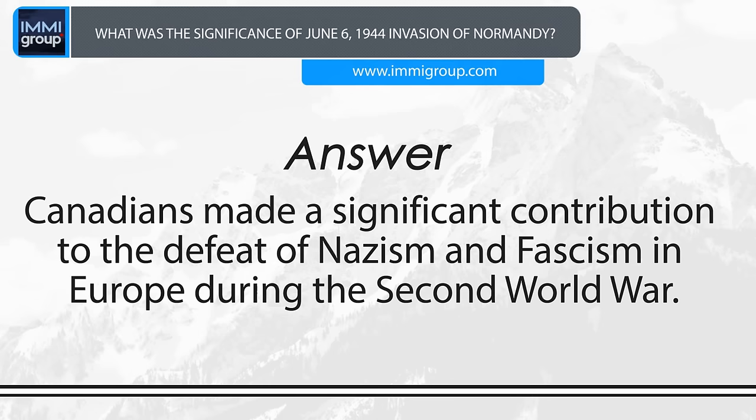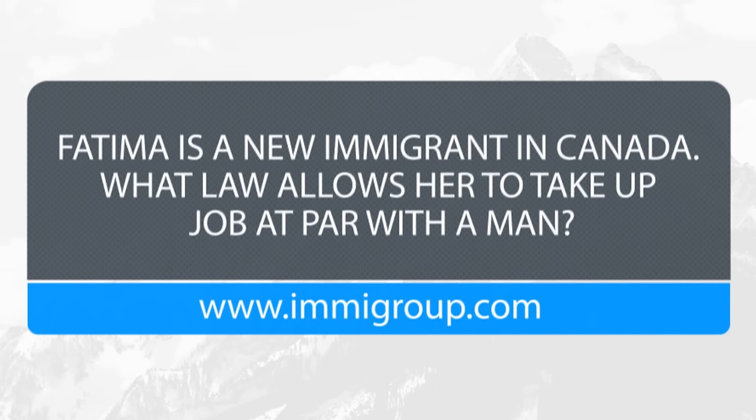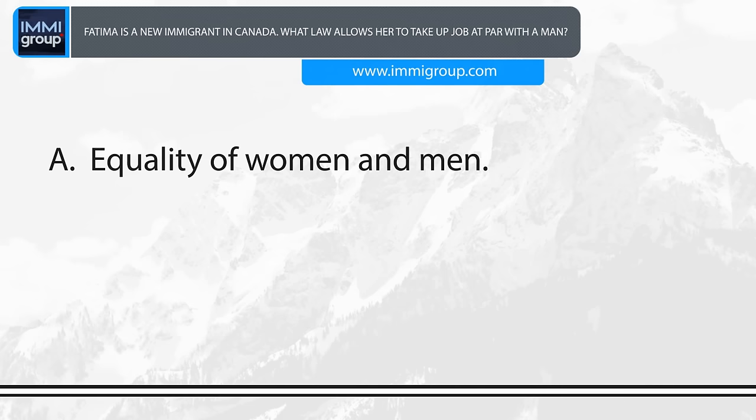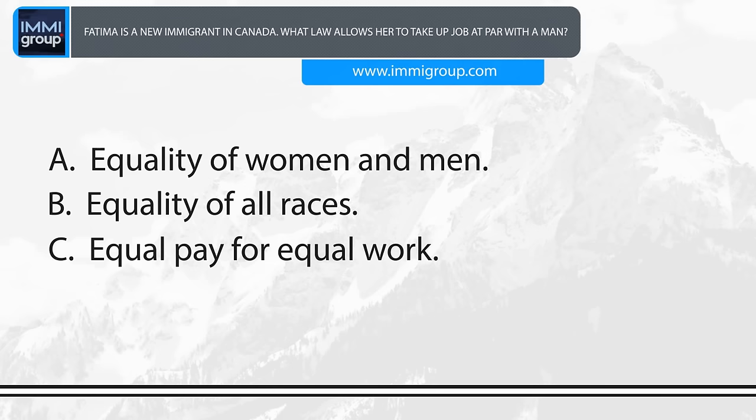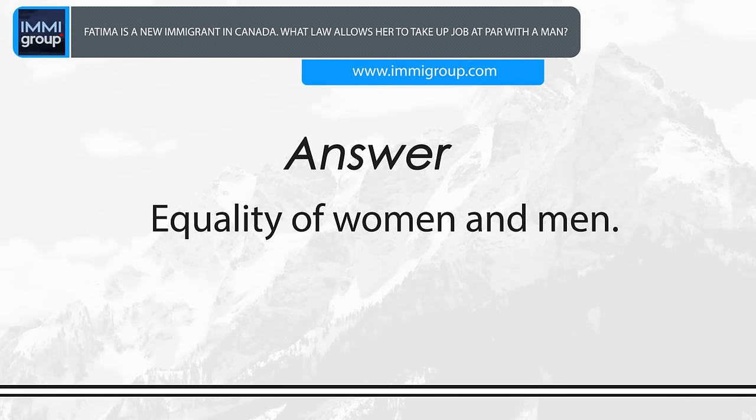Fatima is a new immigrant in Canada. What law allows her to take up a job at par with a man? A. Equality of women and men. B. Equality of all races. C. Equal pay for equal work. D. Equal rights. Answer: Equality of women and men.